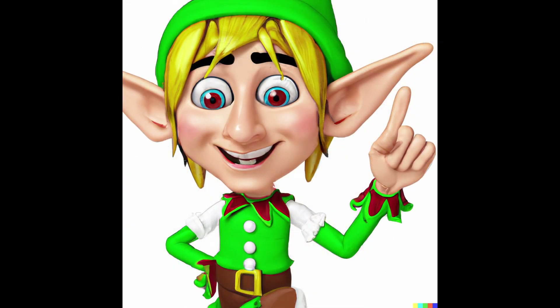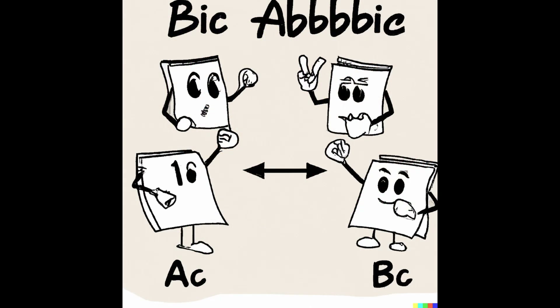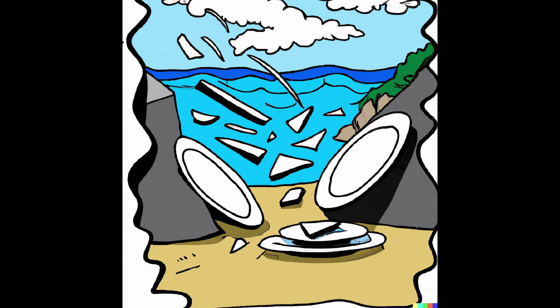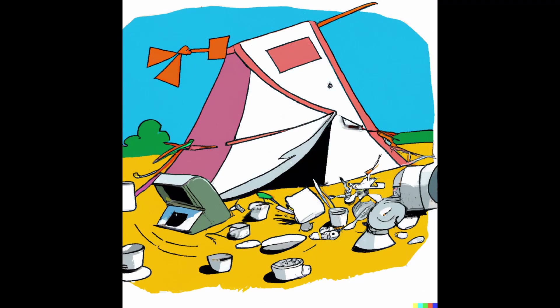The first column indicates what your opponent is going to play — A for rock, B for paper, and C for scissors, explains the elf. The second column... suddenly, before the elf can finish, they are called away to someone's tent.